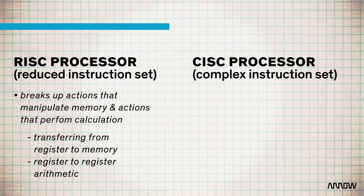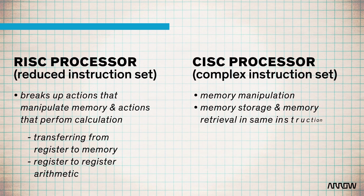Whereas complex instruction set microprocessors — those would be like your x86 ones, what you would expect from Intel or AMD — those can do memory manipulation and memory storage or retrieval all in the same instruction.